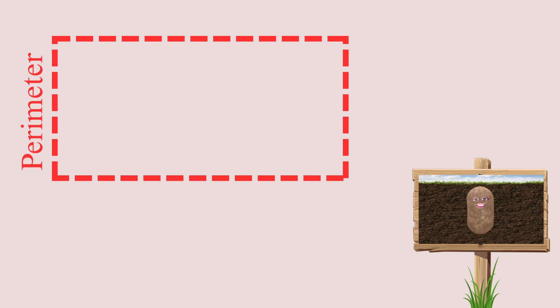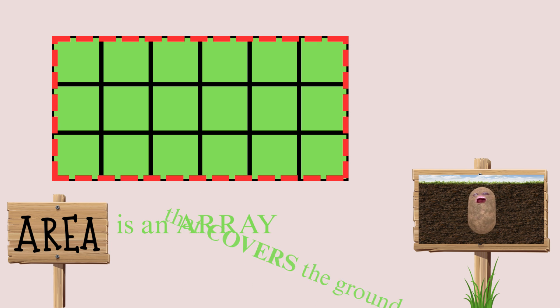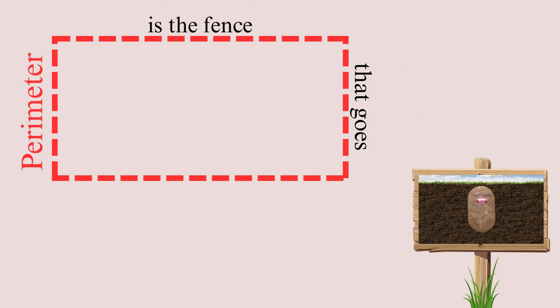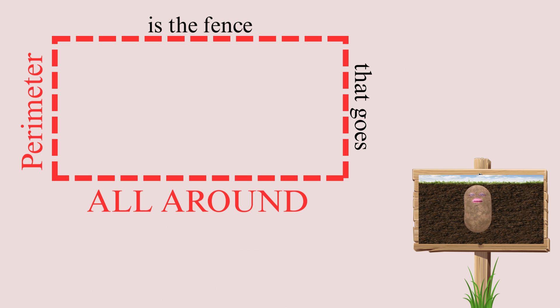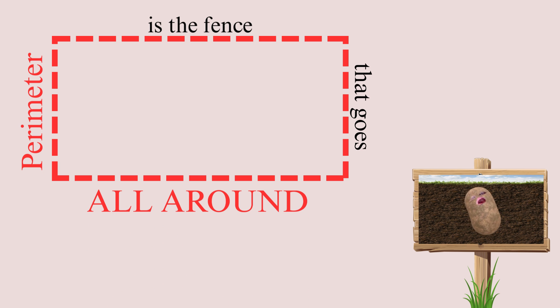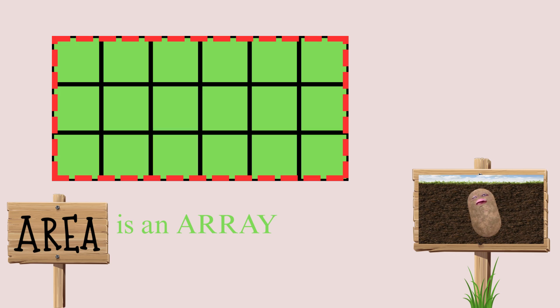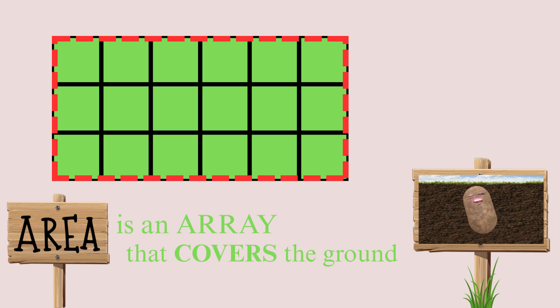Perimeter is a fence that goes all around. Area is an array that covers the ground. Perimeter is a fence that goes all around. Area is an array that covers the ground. Perimeter is a fence that goes all around. Area is an array that covers the ground.